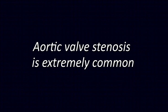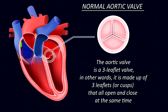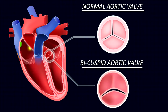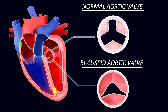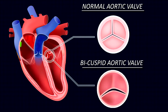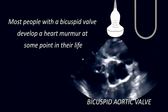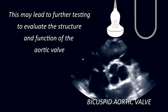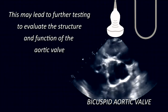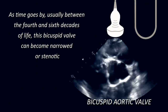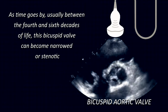Aortic valve stenosis is extremely common and can have several causes. The aortic valve is a three-leaflet valve — made up of three leaflets, or cusps, that all open and close at the same time. Up to two percent of the population is born with an aortic valve that only has two leaflets, called a bicuspid aortic valve. Most people with a bicuspid valve develop a heart murmur at some point in their life, which can be detected by a physician using a stethoscope, leading to further testing to evaluate the structure and function of the aortic valve.